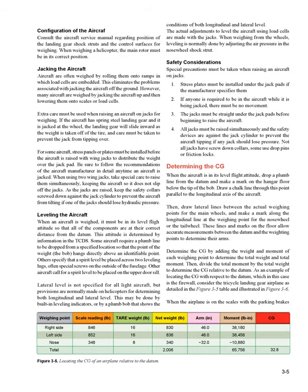Determining the CG: When the aircraft is in its level flight attitude, drop a plumb line from the datum and make a mark on the hangar floor below the tip of the bob. Draw a chalk line through this point parallel to the longitudinal axis of the aircraft. Then draw lateral lines between the actual weighing points for the main wheels, and make a mark along the longitudinal line at the weighing point for the nose wheel or the tail wheel. These lines and marks on the floor allow accurate measurements between the datum and the weighing points to determine their arms. Determine the CG by adding the weight and moment of each weighing point to determine the total weight and total moment, then divide the total moment by the total weight to determine the CG relative to the datum.